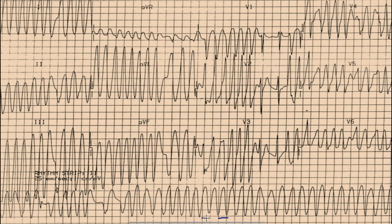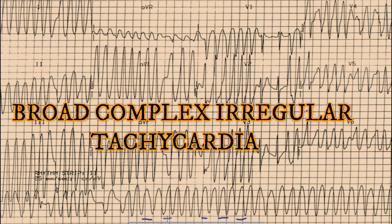Whenever you get a broad complex tachycardia, the next step is to look for whether this is a regular or irregular broad complex tachycardia. By looking at the rhythm strip, we can find that the RR intervals — the interval between two R waves — are obviously different from one another. This RR interval is shorter compared to these RR intervals, so the RR intervals are variable, and this is a broad complex irregular tachycardia.